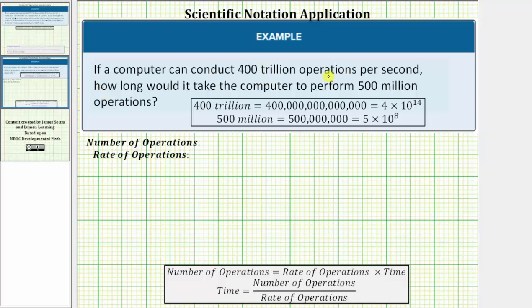If a computer can conduct 400 trillion operations per second, how long would it take the computer to perform 500 million operations? The first thing we should recognize is because 500 million is less than 400 trillion, it is going to take less than a second.